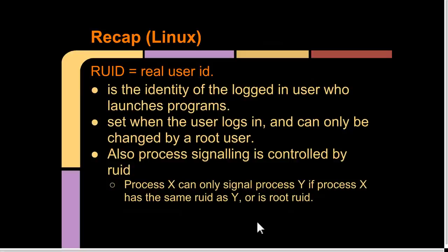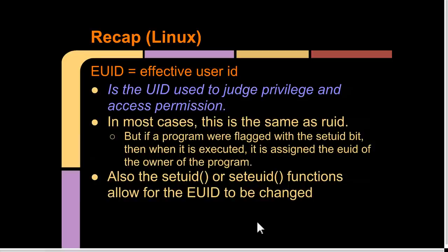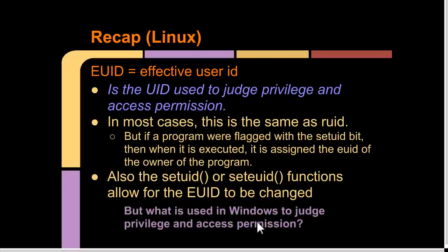To recap: RUID is the real user ID—it's the identity of the user when they log in, can only be changed by root, and is also used by processes for signaling. EUID is what's effectively used to judge privilege and access decisions. In most cases it's the same as RUID, but there are set-UID bits that can be active in programs—when executed, the program runs with the EUID of the owner of that binary. This leads us to: how does Windows do this? Let's look at the Windows security model.